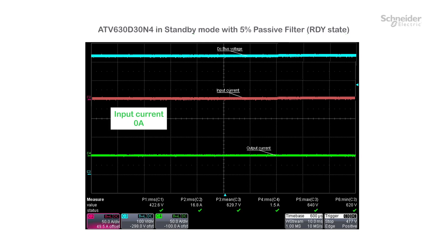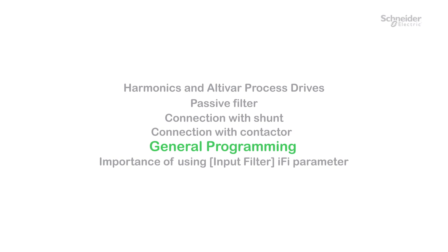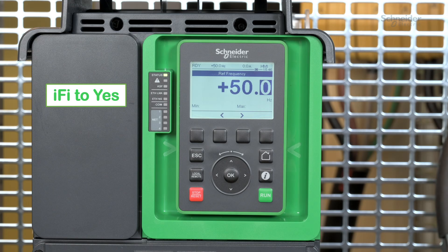We come back to a ready state with opened contactors. We can clearly identify no input current in standby mode. In contrast, due to reactive components, we can identify an input current of 25% of nominal current in standby mode without the contactor. Before using an input passive filter, you must set the input filter.